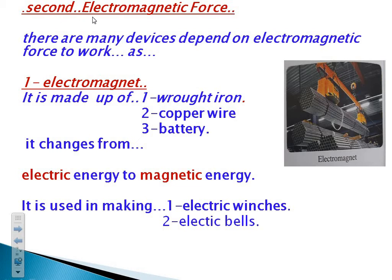Now we talk about the second one, which is electromagnetic force. There are many different devices around us that depend on electromagnetic forces to work. We will talk about three of them. Number one is called the electromagnet. It is a device made up of three parts — its components are very important to know: number one, soft iron or an iron nail; number two, copper wire; and number three, a battery.